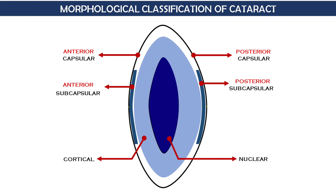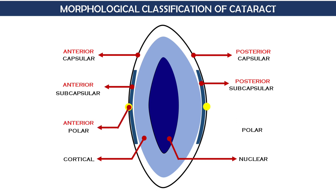Finally, we have opacification of the poles of the lens, known as polar cataract, which can be anterior polar cataract or posterior polar cataract. With that, we are done with the classification of cataract. In further videos, we will take each type of cataract based on etiology and discuss them one by one.